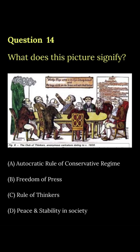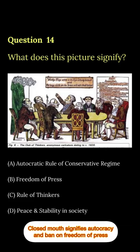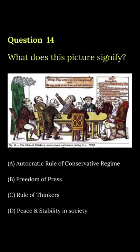In this last photo, we are seeing the autocracy of a conservative regime. The conservative regime did not allow anyone to go against them — they didn't like criticism and dissent — so the right answer here is option number A.